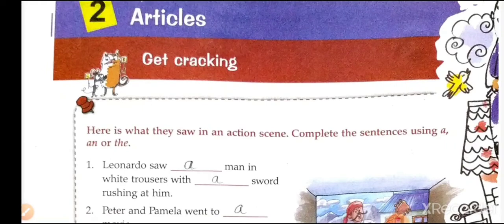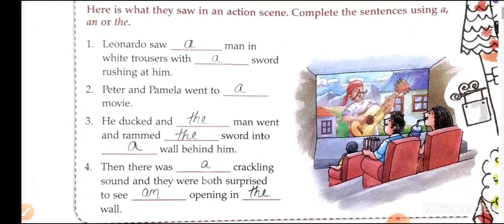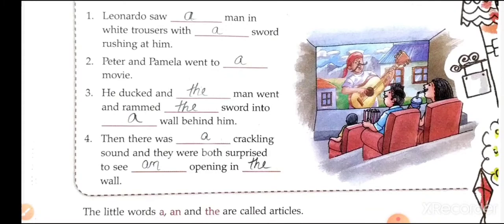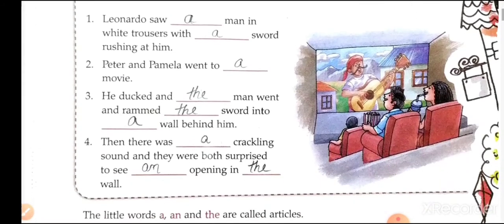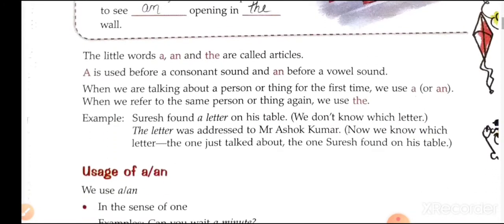Get cracking! Here is an exercise: complete the sentences using 'a,' 'an,' or 'the.' Leonardo saw a man in white trousers with a sword rushing at him. Peter and Pamela went to a movie. He ducked and the man rammed the sword into a wall behind him. Then there was a crackling sound, and they were both surprised to see an opening in the wall. Students can try this on their own first in their textbook.